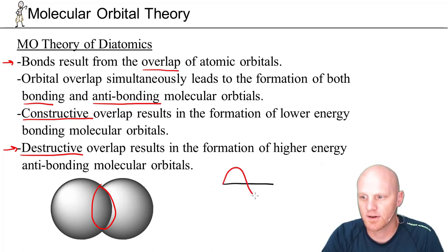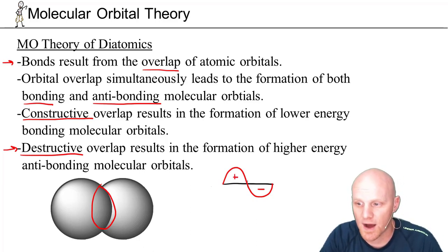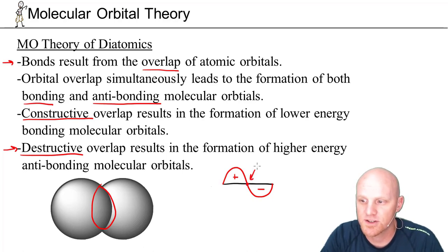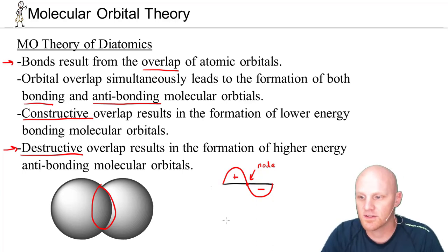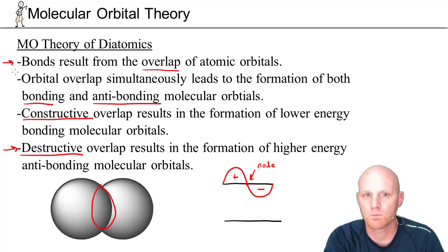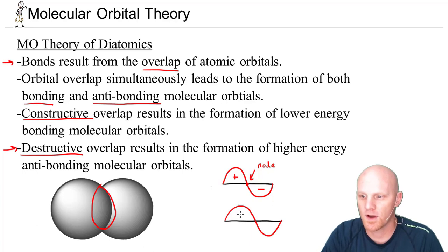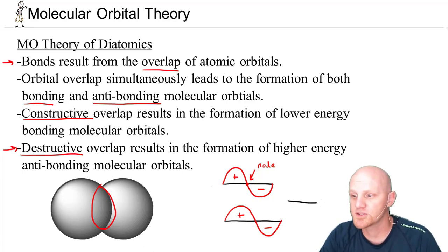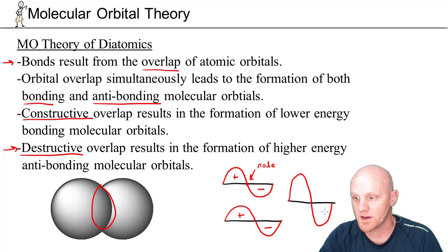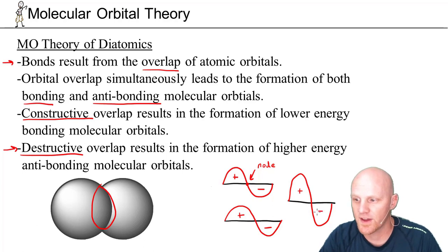To understand this, consider the example of a sine wave. A sine wave takes on positive values from 0 to pi and negative values from pi to 2pi. Right at pi, the sine function equals zero — when a wave function equals zero, we refer to that as a node. If we take a second sine function and superimpose them so that plus lines up with plus and minus with minus, we refer to that as constructive overlap — the wave functions are in phase. The result is an amplified function that's roughly twice as big, still positive from 0 to pi and negative from pi to 2pi.